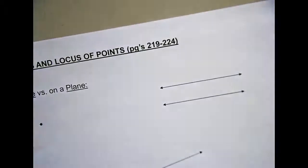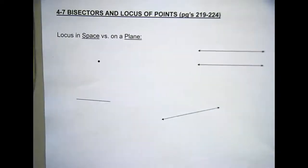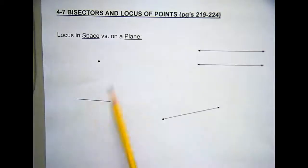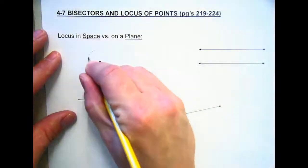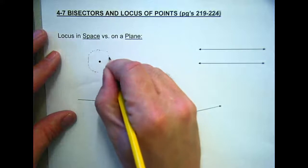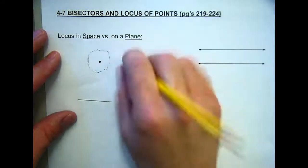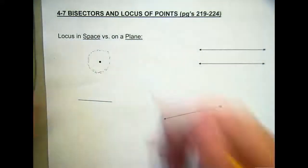The next step says locus in space versus a plane. Space is three-dimensional; a plane is two-dimensional. Everything we've done so far is two-dimensional — on a flat surface. In space, we have that depth. On a plane, a set of points equidistant from a given point is a circle. In space, what does a circle look like? A sphere.